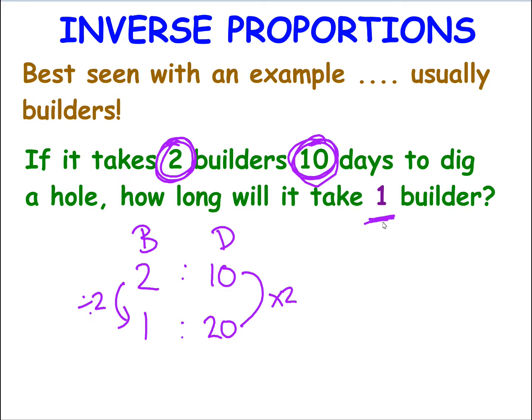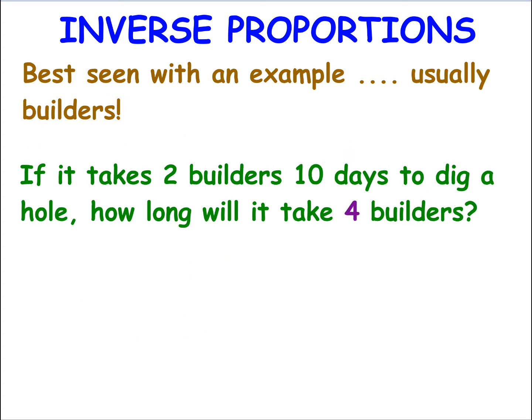So instead of reducing the number of builders and increasing the length of time, let's have a look at one where we increase the number of builders to four. So we know there's a relationship between builders and days, and we know it takes two builders ten days to dig this hole. Now, this time, if I increase the number of builders, so I've got a scale of two, I would expect it to take less time to dig my hole. So let's divide by two.